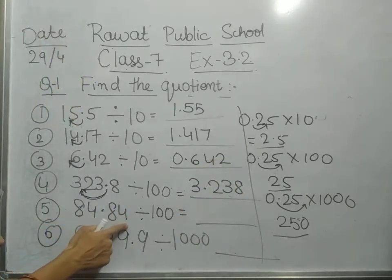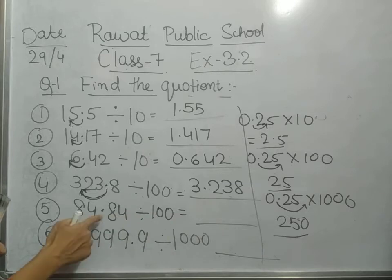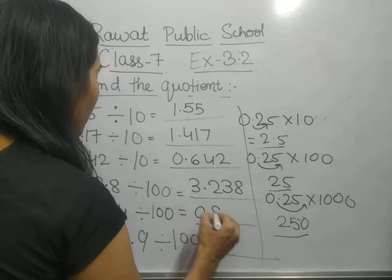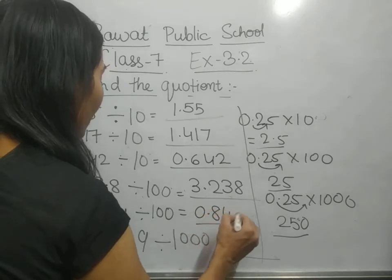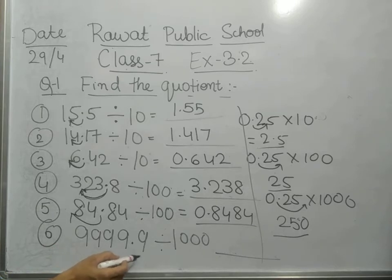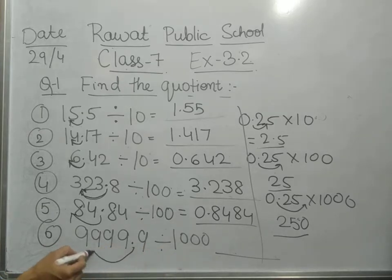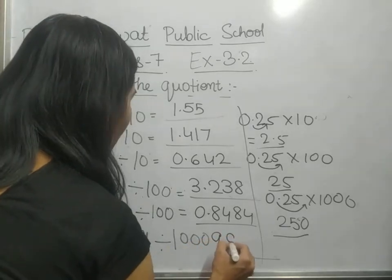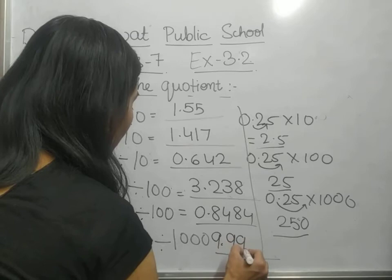84.84 divided by 100 — the decimal will move to the left by 2 digits, so it will be 0.8484. Now 9999.9 divided by 1000 — the decimal will move 3 positions to the left, so you will get 9.9999.